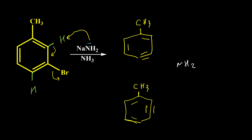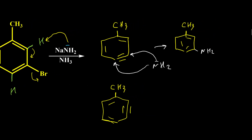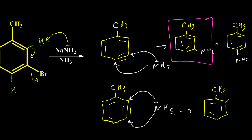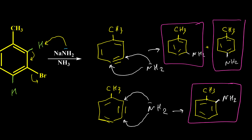We have two possibilities for each benzyne intermediate. NH2⁻ can attack the meta position or the para position for the first one, giving meta and para products. For the second benzyne, we also have two possibilities: addition to ortho or addition to meta. Addition to meta produces the same product as from the first benzyne, but addition to ortho produces a new product. So for this reaction we have three different products: ortho, meta, and para.